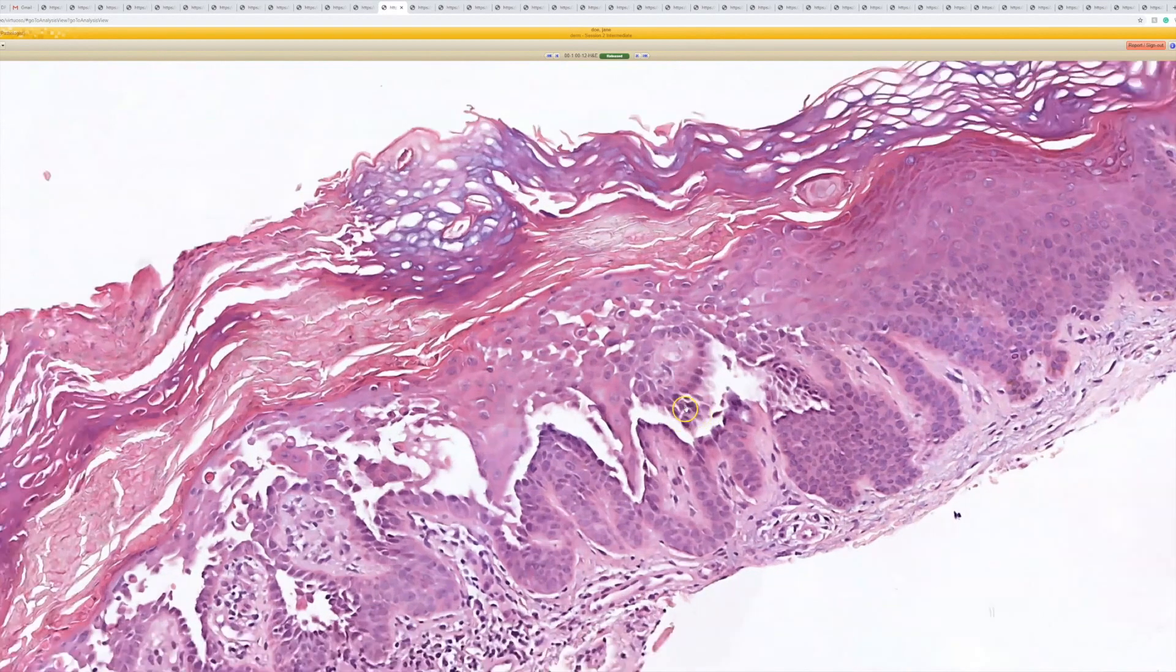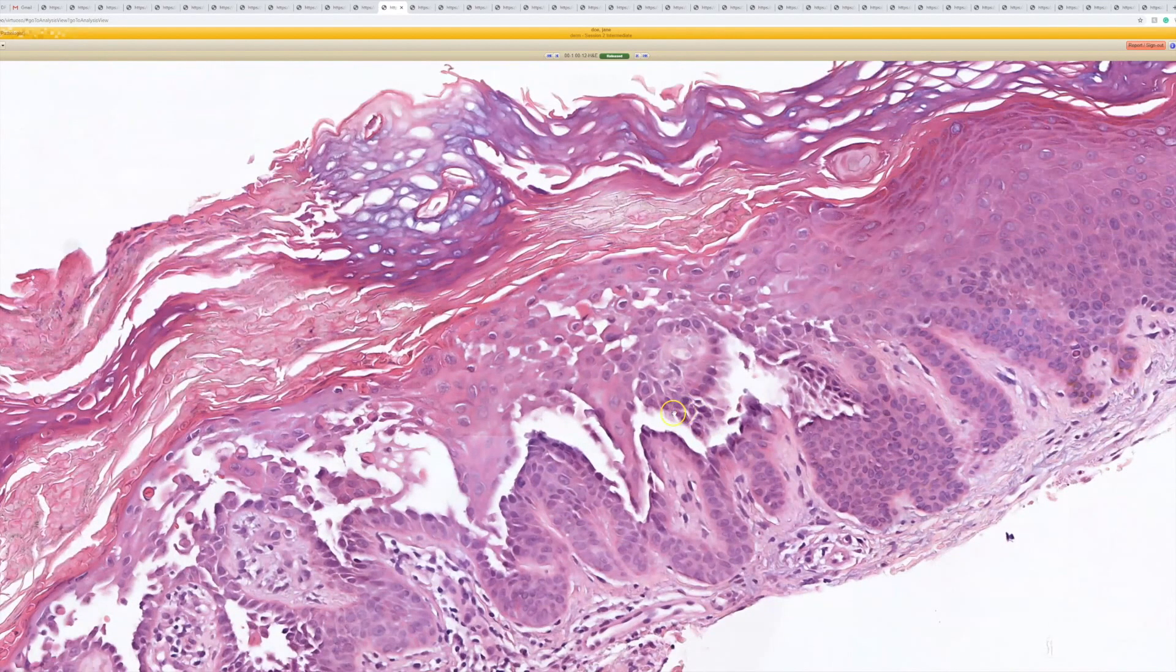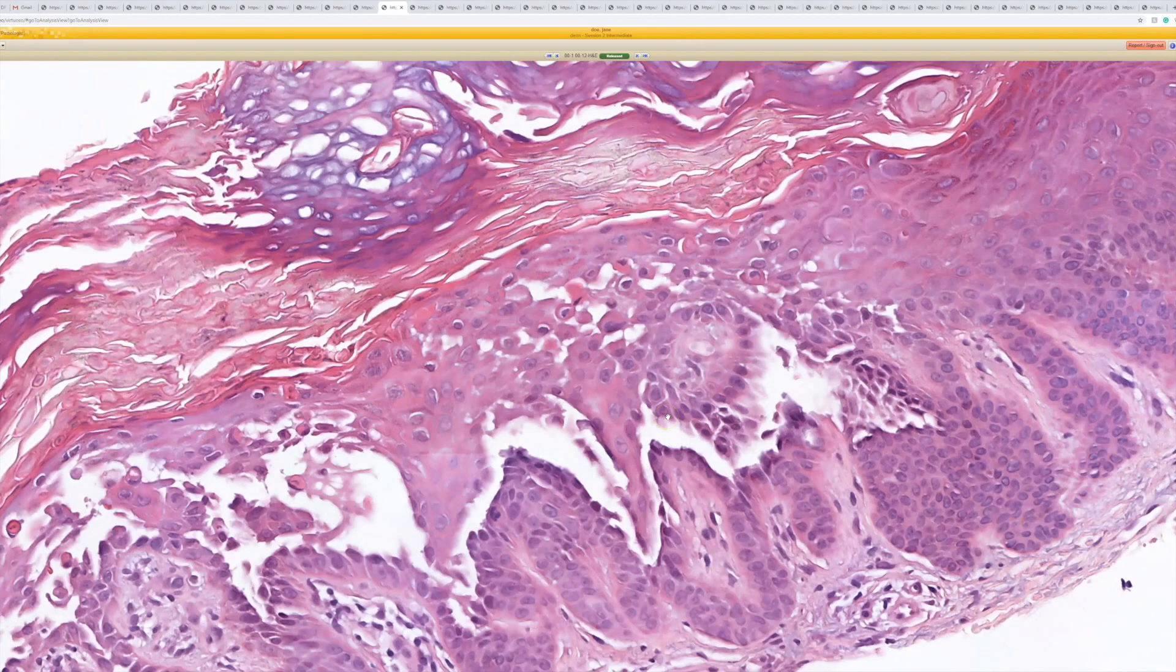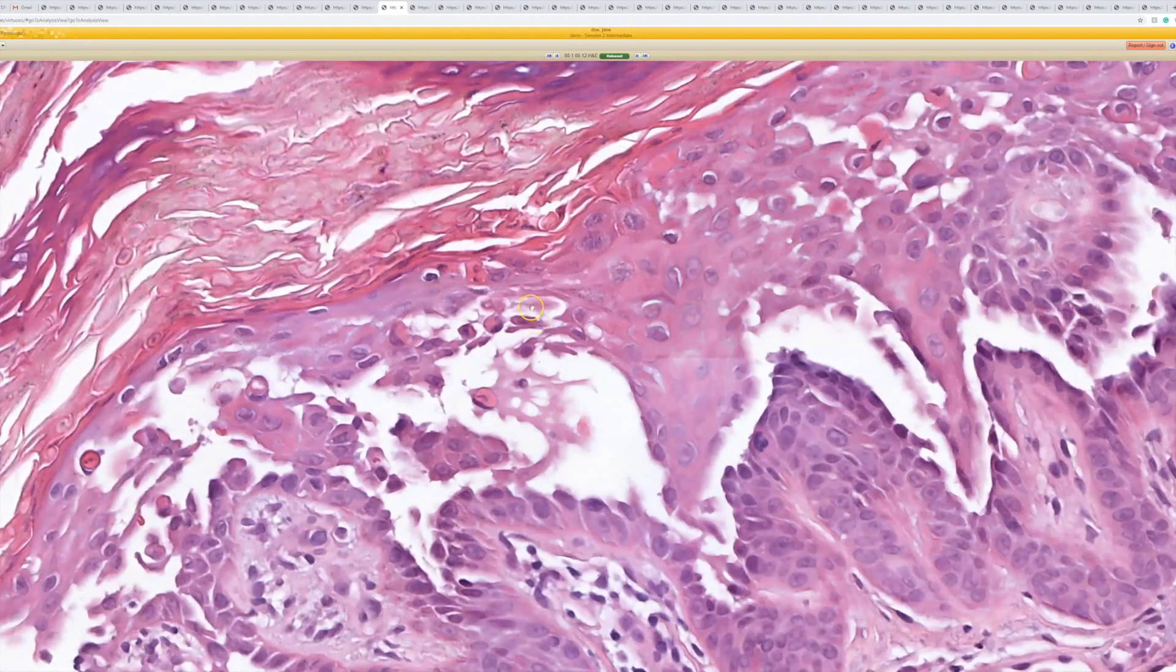This is another one of those where the pattern is acantholysis and dyskeratosis. We've got the cells falling apart. When they get acantholytic, they are not stretched out hooked up to their neighbor keratinocyte, so their cytoskeleton bunches up next to the nucleus. That makes it look a lot more dense pink because the keratin filaments, instead of being stretched out, are all bulged up around the nucleus, so it has a very dense pink look. That's one way that helps you tell that what you're dealing with is acantholysis.